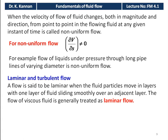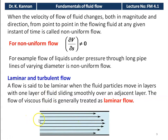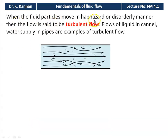Laminar flow occurs when fluid particles move in layers, with one layer sliding smoothly over the adjacent layer. The flow of viscous fluids like oil is generally treated as laminar, with each fluid particle moving in a straight line. Turbulent flow occurs when fluid particles move in an erratic or disorderly manner, frequently changing direction — examples include water supply in a pipeline or flow in a channel. In practice, all flows are turbulent; it is very difficult to establish laminar flow in practical situations.